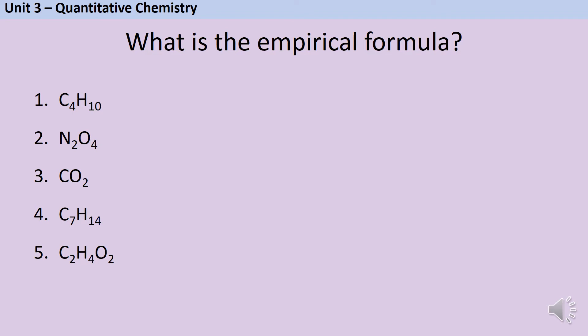Here we have the molecular formulae of five compounds and in each instance we're looking for the empirical formula, so the simplest whole number ratio of the atoms. For the first one C4H10 or butane, I can simplify that four to ten ratio down to two to five so my empirical formula is C2H5. Pause the video and write down what you think the empirical formulae of the other four compounds are.